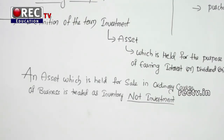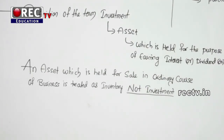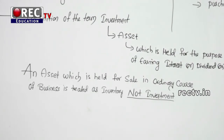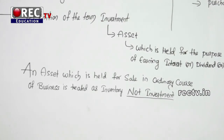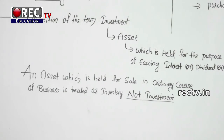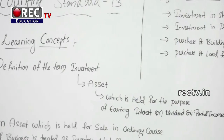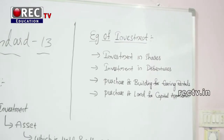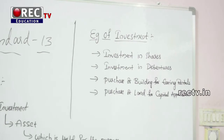As we have seen in AS 2, anything held for sale in the ordinary course of business is treated as inventory, not investment. Some examples of investment include: purchasing shares in a company, purchasing debentures in another company to earn interest, and purchasing a building to earn rental income or for capital appreciation.